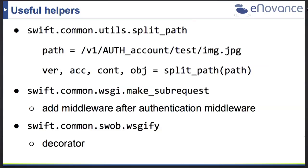There are some helpful tools we'll use. split_path takes the path from your URL and returns your API version, account name, container name, and object name. You can configure it to raise an exception if no object name is found — it doesn't make sense to create a preview for a container or account level request. We also need to execute sub-requests within the proxy server to store the preview, and this middleware must be placed after your authentication middleware.